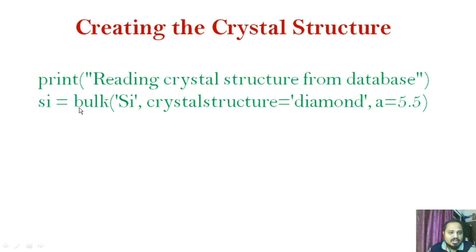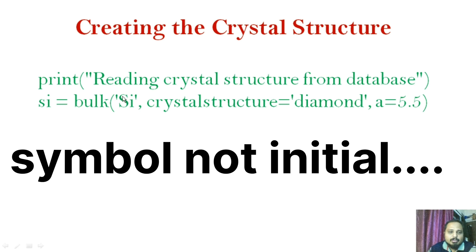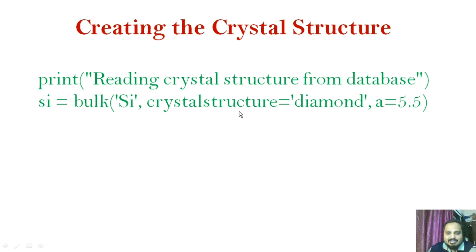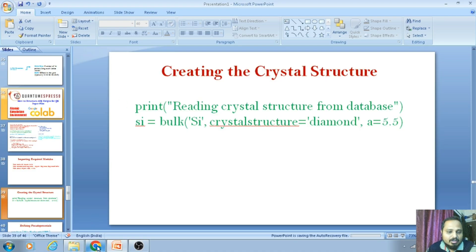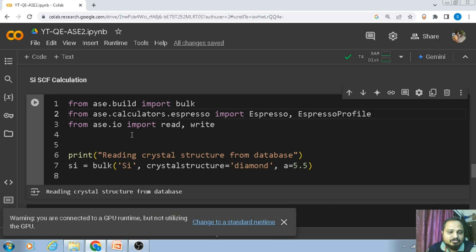Next I will import the crystal structure in my Python code. For that I create one variable 'si' and use the 'bulk' keyword. I write the element symbol 'Si', the crystal structure which is 'diamond', and the lattice parameter a equal to 5.5. This allows me to import the crystal structure of silicon from the database and assign it to the variable 'si'.